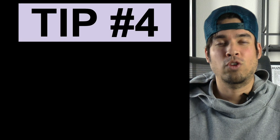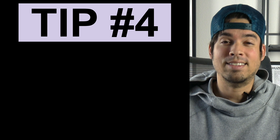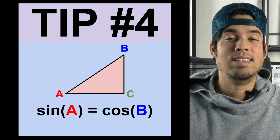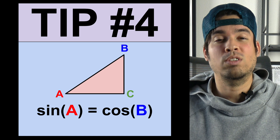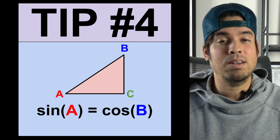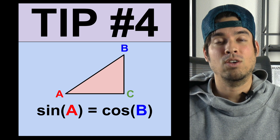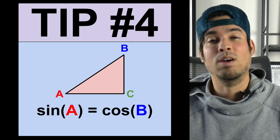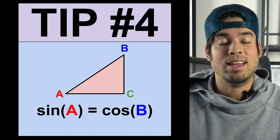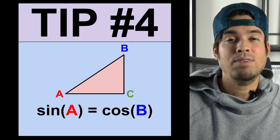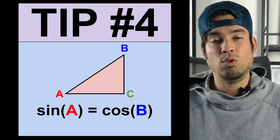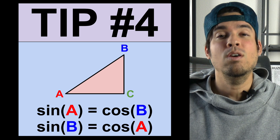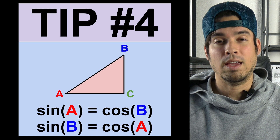Tip number four has to do with sine and cosine. Sine of an angle equals cosine of the complement of that angle. This comes up a lot — for example, when you have a right triangle and two angles that are not right, a and b, sine of a will equal cosine of b, and vice versa is also true: sine of b will equal cosine of a.